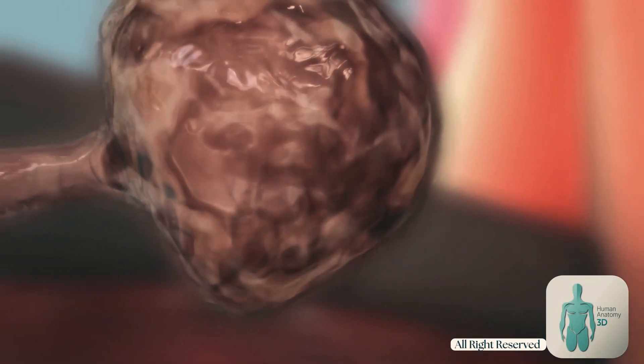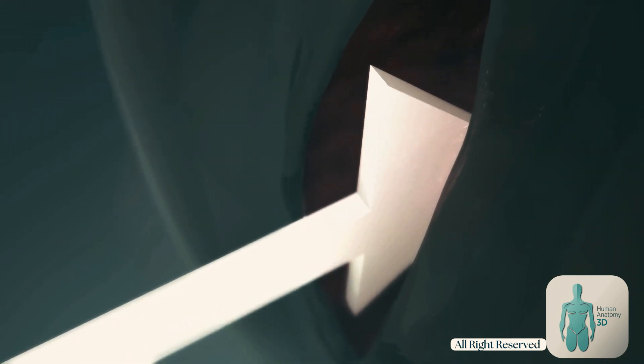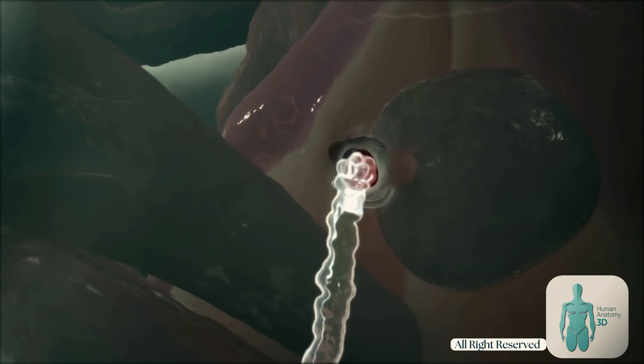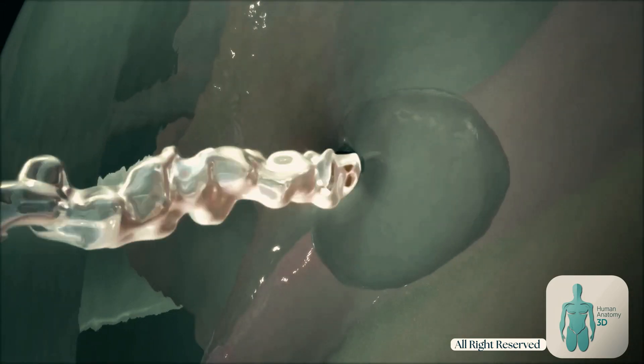Like the male prostate gland, Skene's glands also play a role in sexual health. When aroused, the tissue around the Skene's glands and the clitoris become swollen due to increased blood flow to the area. As the Skene's glands become stimulated, they secrete mucus-containing fluids which help with lubrication during vaginal intercourse. This can make sexual intercourse more pleasurable.